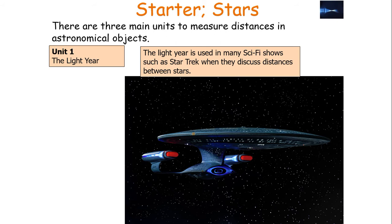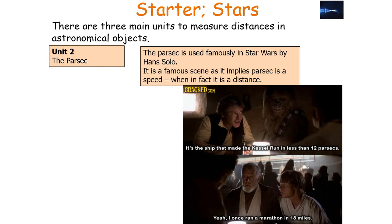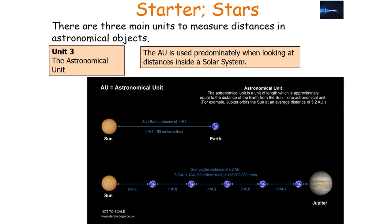The first unit is the light year, which is used in many science fiction shows, such as Star Trek, where they discuss distances between stars. You've got the parsec, which was famously used in Star Wars by Han Solo — it's a famous scene, as it implies the parsec is a speed when it's actually, in fact, a distance. In the particular Star Wars scene, it says it's a ship that made the Kessel Run in less than 12 parsecs. That would be like saying I once ran a marathon in 18 miles, because parsecs is a measure of distance. The third unit is the astronomical unit, or the AU, which is used predominantly when looking at distances inside our solar system.